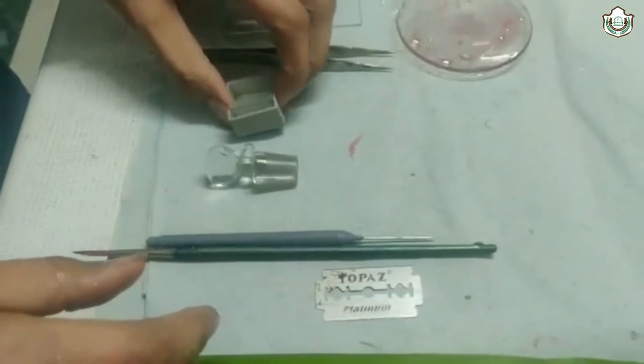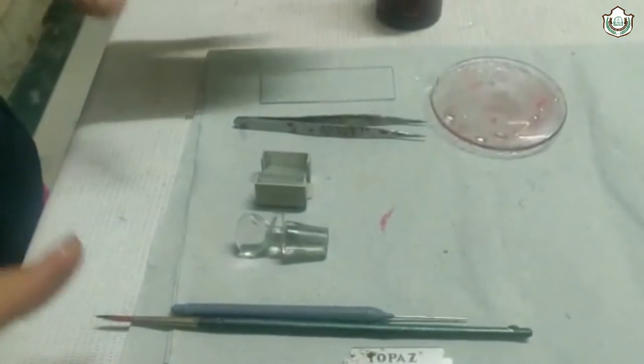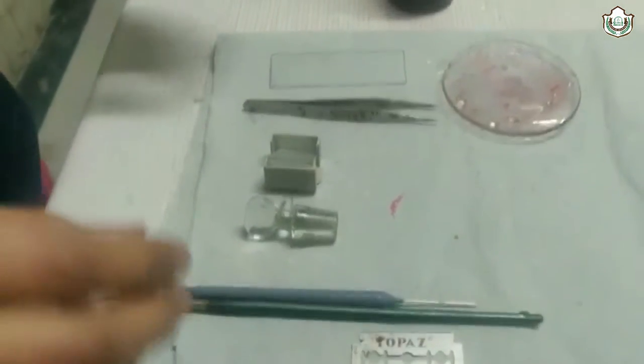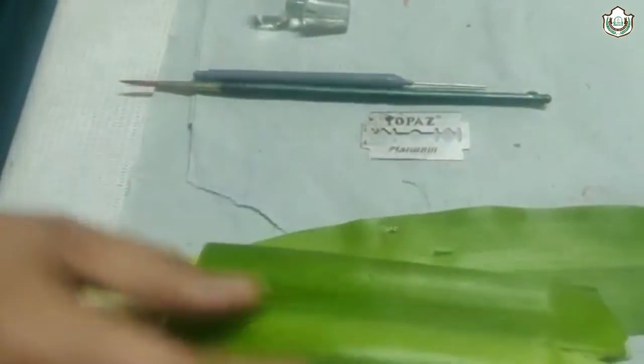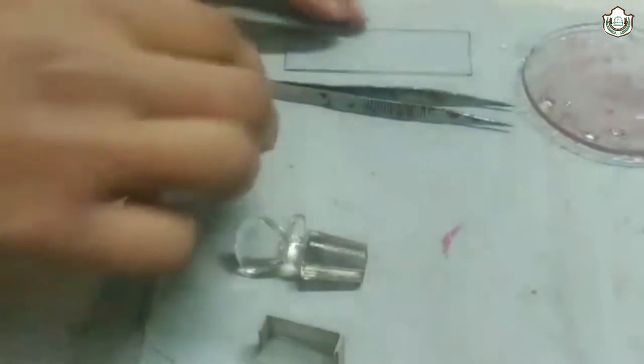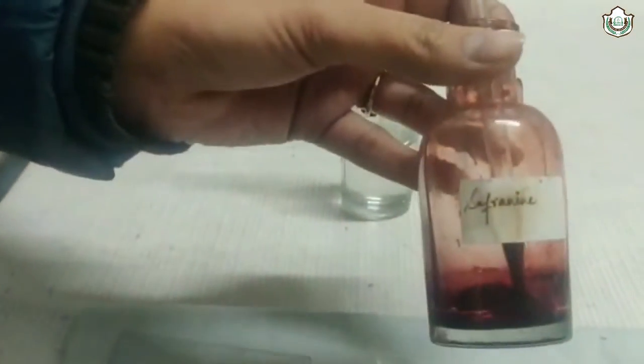Today we are going to study the experiment to prepare a temporary mount of tomato peel index. For this, materials required are monocut leaf, brush, needle, cover slip, microscopic slide, watch glass with water, staining material, saffronine, and glycerin.